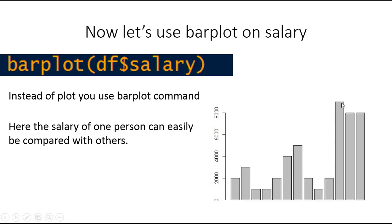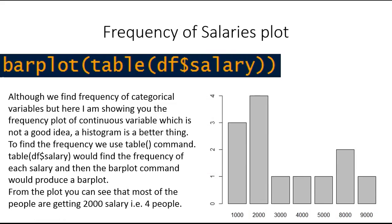For example, this person's salary is less than this one. Similarly, this person has the highest salary among all the persons and these two people have equal salary. To find the frequency of the different salaries — how many people are getting a salary of 1000, 2000, or 3000 — you use the barplot command but inside it you use the frequency of df$salary. So table is a command used for frequency finding for different salaries.